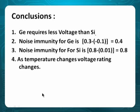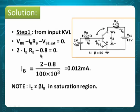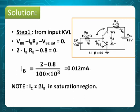Problem 3: Repeat illustrative problem 1 using the saturation method. Because input is forward, you have two options — active method or saturation method. We finished the active method, so now saturation method. Same problem: VBB minus IB·RB minus VBE(sat) = 0. Solve for IB. Once you have IB, do not multiply IC = beta × IB, because IC = beta × IB is not valid in saturation. In saturation region, current gain is not defined. Just keep IB.